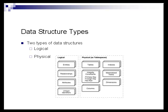Data structure types. There are two types of data structures, logical and physical. During the logical design phase, you define a model for a data warehouse consisting of entities, attributes, and relationships. The entities are linked together using relationships. Attributes are used to describe the entities. The unique identifier distinguishes between one instance of an entity and another.